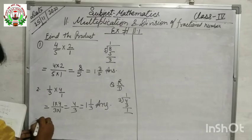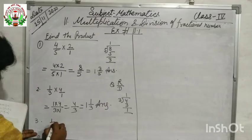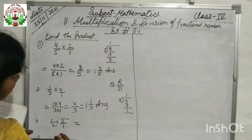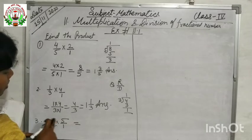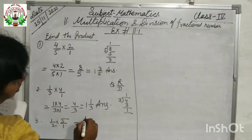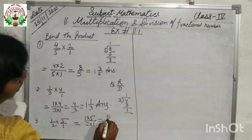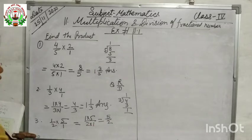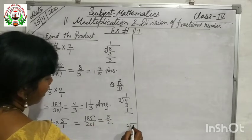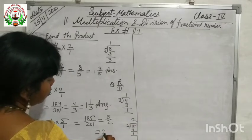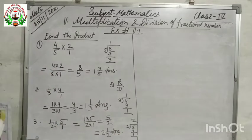Question number 3 is 1/2 into 5. Again it is a whole number, so we write it as divided by 1. Even if you are not writing divided by 1, you will multiply the whole number with the numerator: 1 into 5 by 2 into 1. That gives 5/2. Converting to mixed fraction: 2 twos are 4, so the answer is 2 and 1/2.